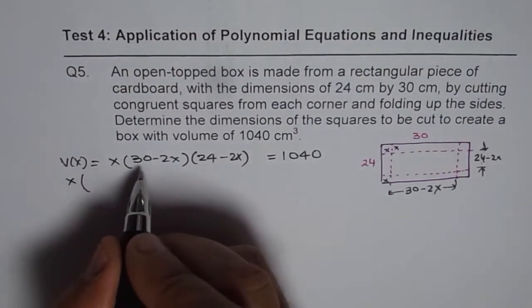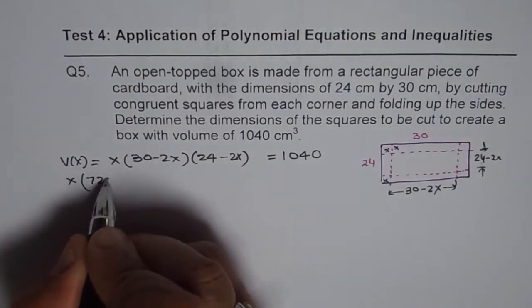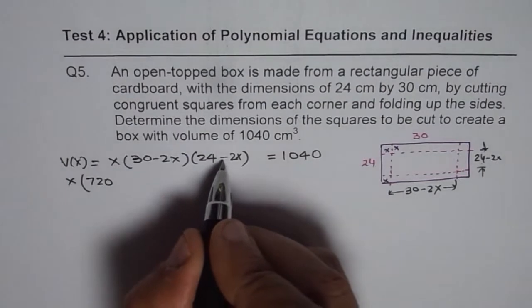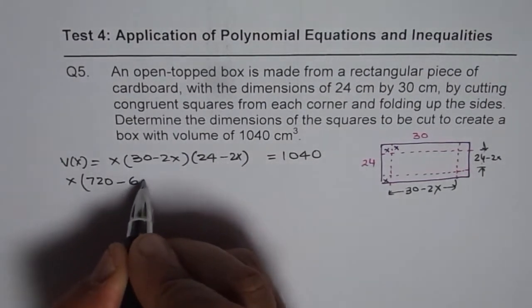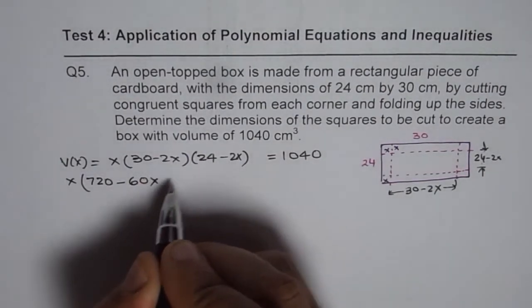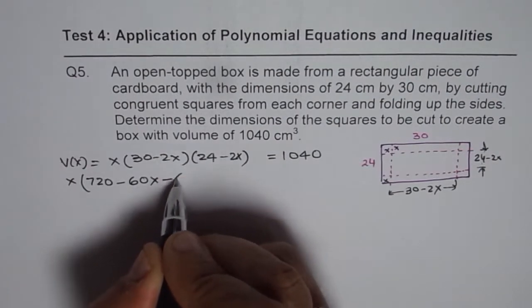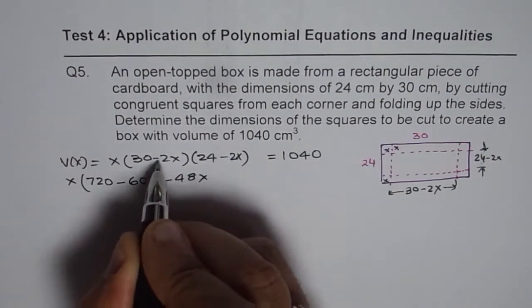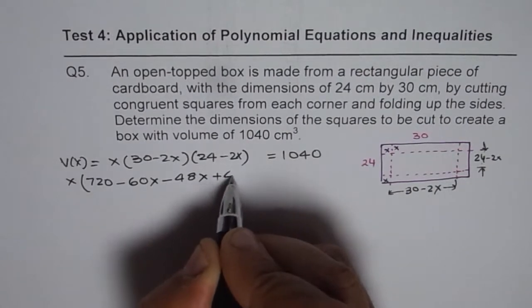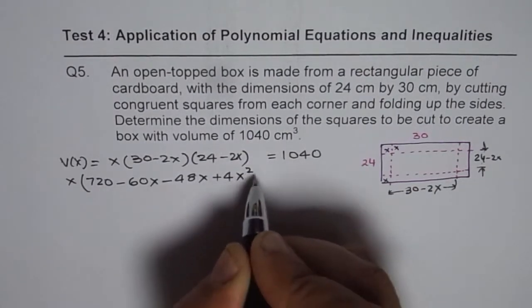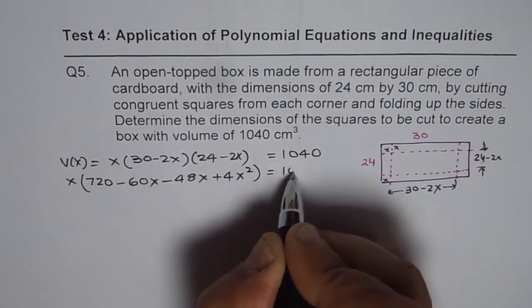30 times 24 will give us 720. 30 times minus 2x is minus 60x. Minus 2 times x times 24 is 48. And minus 2 times minus 2 is 4. x times x is x square. So, that should be equals to 1040.